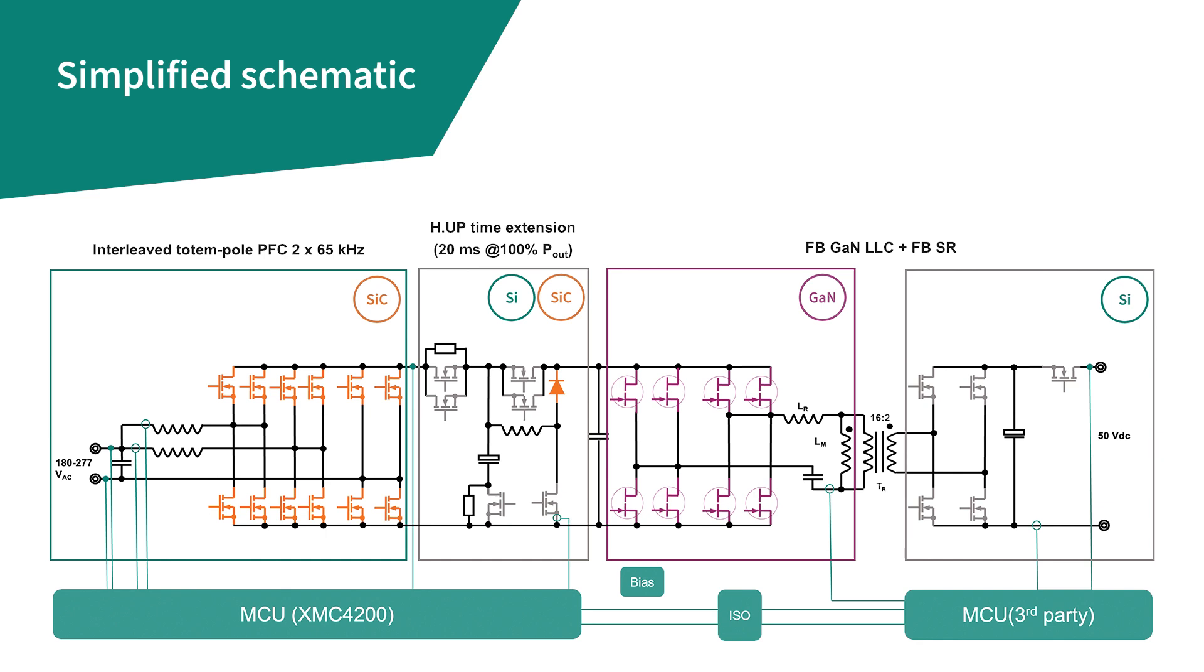It provides galvanic reinforced isolation, regulates the output voltage to 50 volts DC nominal, and rejects the double-line frequency ripple present on the bulk voltage.